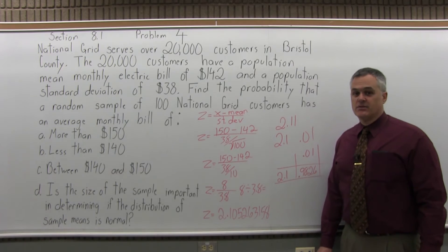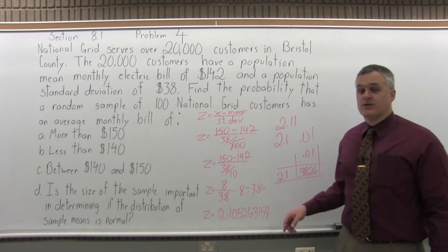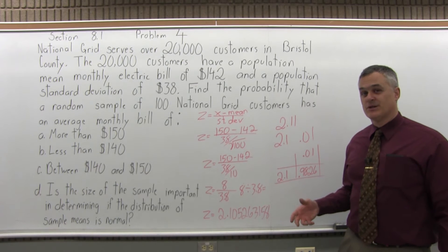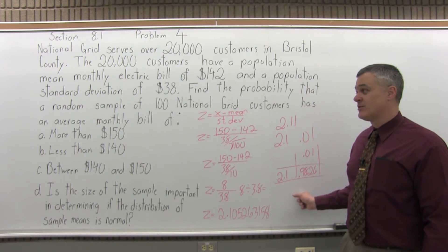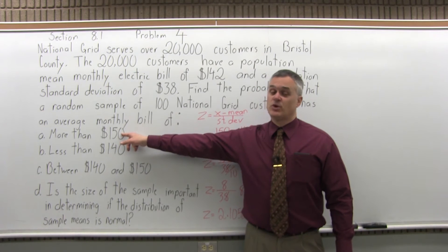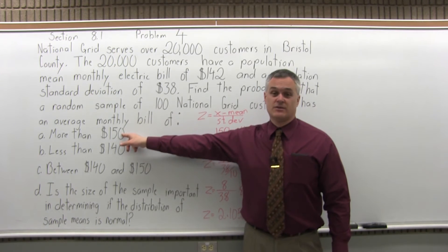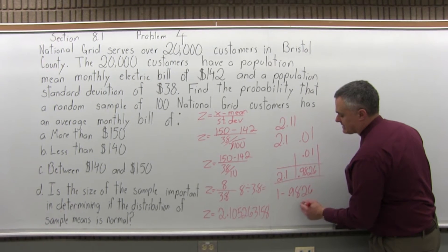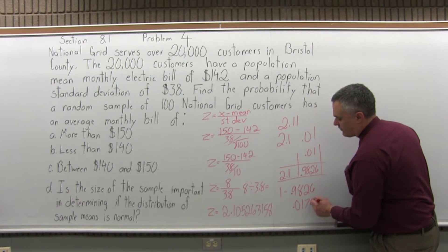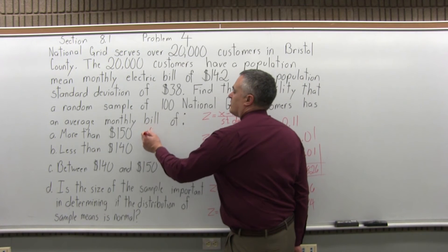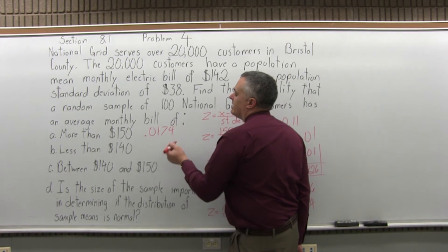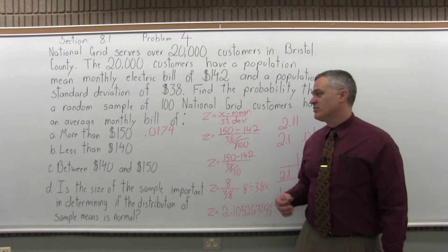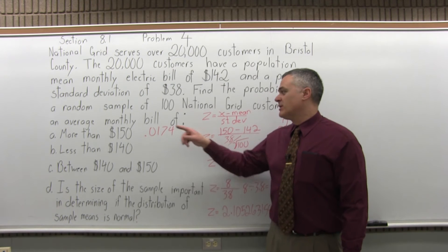That value from the chart is .9826. If the question is a less-than question, that chart number is the answer. But since this is a greater-than question — more than $150 — I have to do 1 minus the chart value: 1 minus .9826 equals .0174. So the answer to Part A is .0174, about a 1¾ percent probability that a random sample of 100 customers has an average bill over $150.